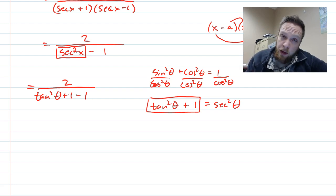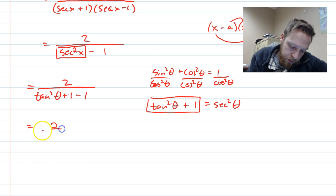And now, the nice thing about that is those one and the negative one cancel. So really, this is two all over tan squared of theta.